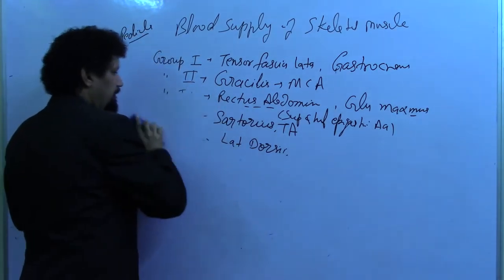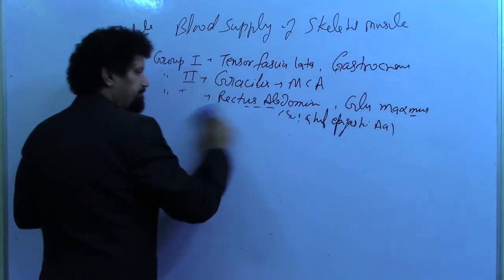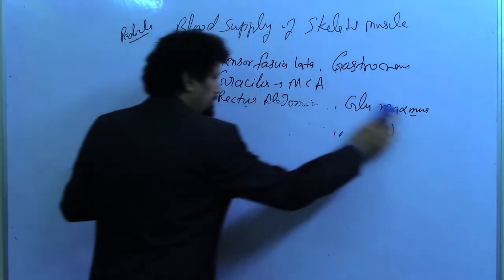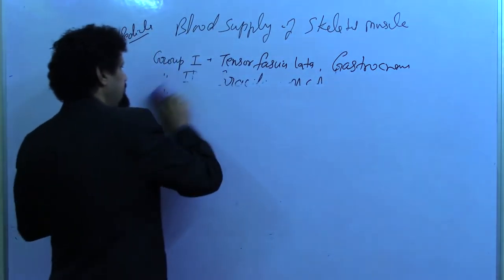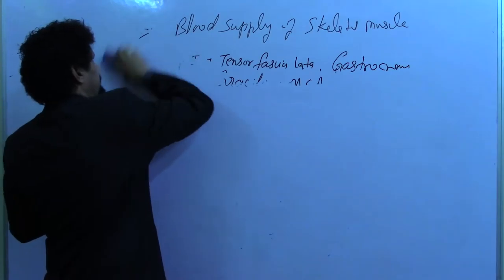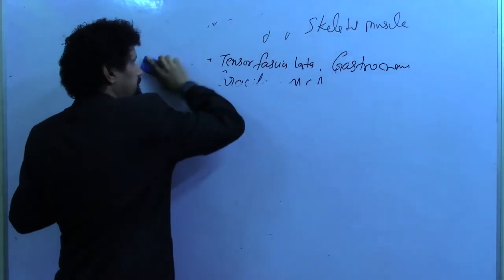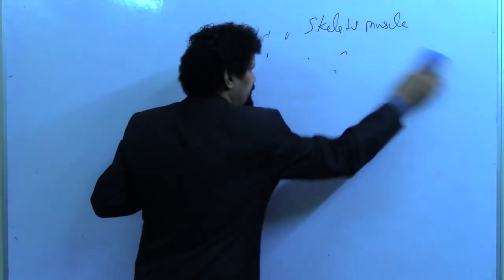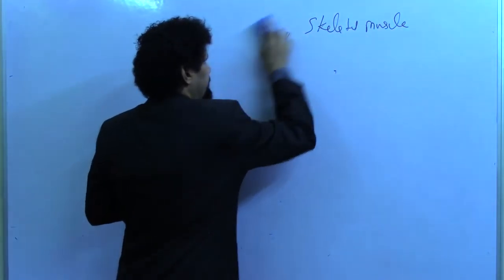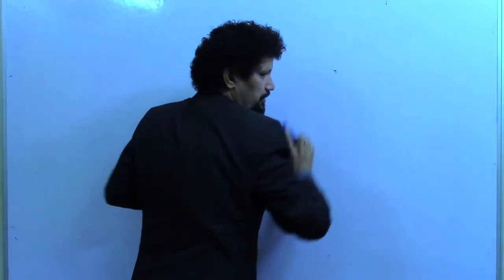So muscles are divided into five groups according to their blood supply. Muscles are metabolically very active and thus richly supplied by blood and nutrients. Now I will talk about the nerve supply of the muscle.